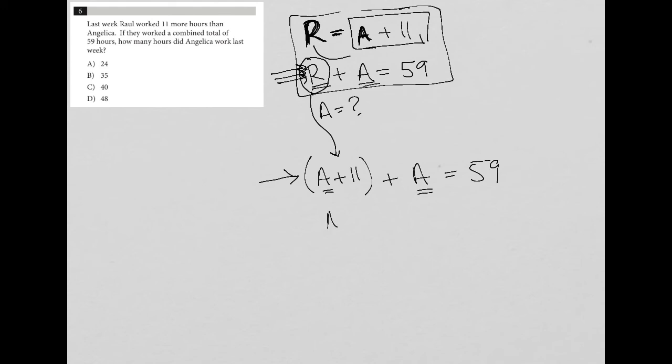So let's simplify this. So this becomes A plus 11 plus A equals 59 because those parentheses are not required. I combine like terms. A plus A is 2A. So 2A plus 11 equals 59. I can subtract 11 from both sides here, and I'm left with 2A equals 48.